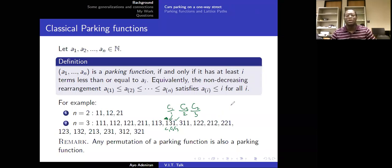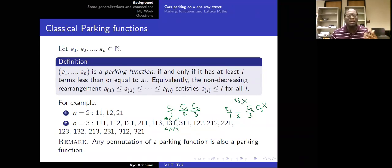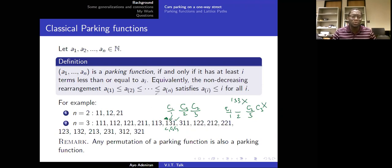Let's try the sequence 1, 3, 3. The first car parks at spot 1. The second car parks at spot 3. Now the third car wants spot 3, but it's occupied, so it has to leave the street. So we say this is not a parking function. One important property of parking functions is that any permutation or rearrangement of a parking function is also a parking function.